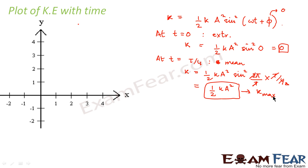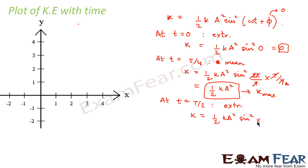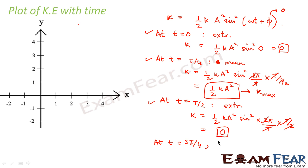So the value of kinetic energy varies between zero and half k a squared. At t equals T/2, the object is again at the extreme position. Substituting omega equals 2π/T and t equals T/2 gives sine(π) equals zero, so kinetic energy is again zero. Similarly, at t equals 3T/4 kinetic energy is again half k a squared, and at t equals T kinetic energy is again zero.